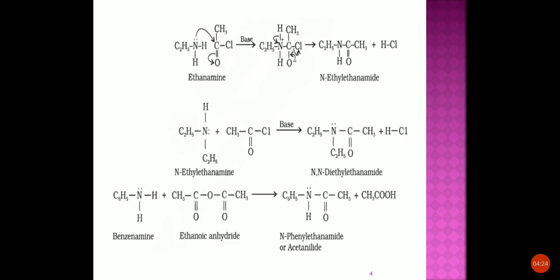The last acylation equation shows aniline (benzenamine) reacting with ethanoic anhydride. One hydrogen from the aniline NH₂ is removed, and a COCH₃ group from the ethanoic anhydride is incorporated, giving the corresponding amide product.